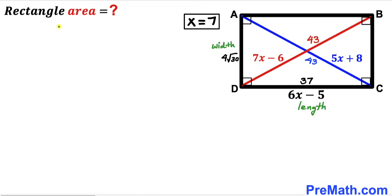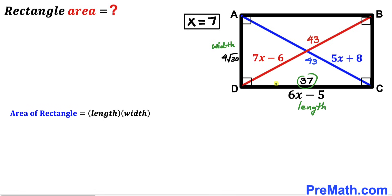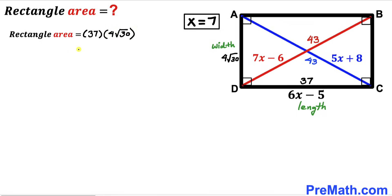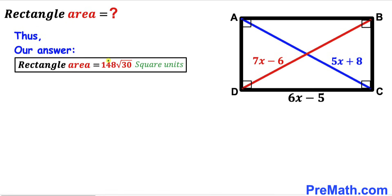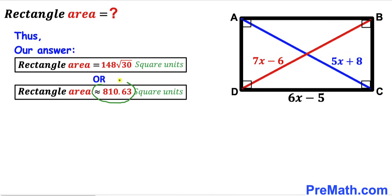Now for our final step, we calculate the area of rectangle ABCD. Recalling the formula: area equals length times width. The length is 37 and the width is 4 times the square root of 30. So the area equals 37 times 4 times the square root of 30, which gives us 148 times the square root of 30 square units, approximately equal to 810.63 square units. That is our final answer.